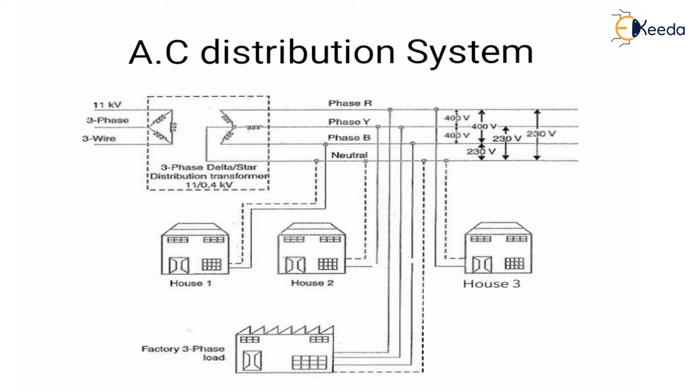Let's look at the AC distribution system. We know that electricity is generated, transmitted, and distributed in the form of AC, and the magnitude of voltage can be stepped up or stepped down conveniently with the help of a transformer. AC distribution is classified as primary distribution and secondary distribution. In primary distribution, the system operates at a voltage somewhat higher than general utilization.